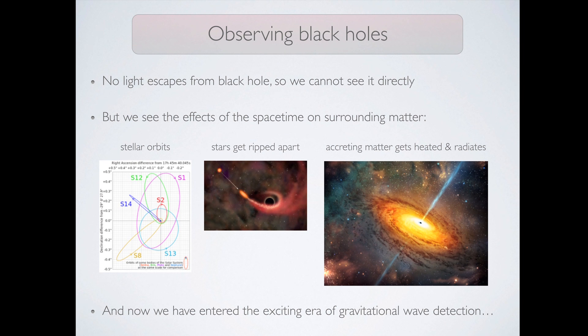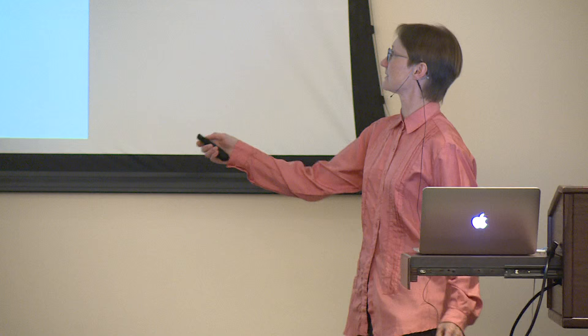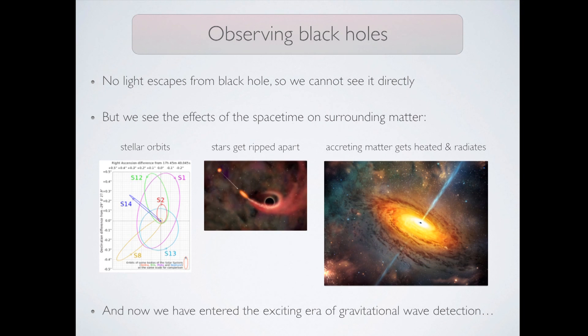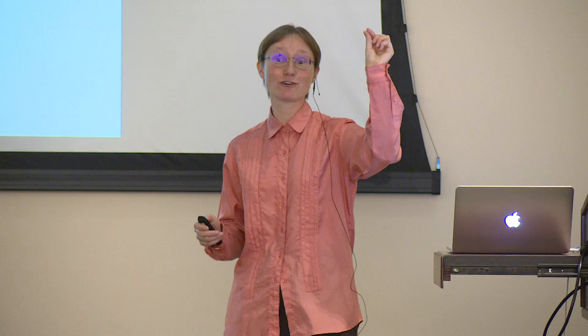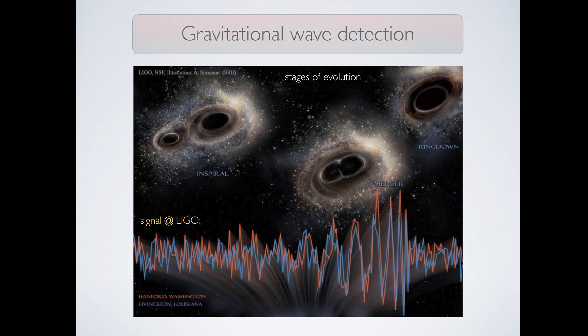So for example, the supermassive black hole at the center of our own galaxy, Sagittarius A star was first ascertained by observing stellar orbits around the center. More dramatically, if a star gets sufficiently close to a comparable size black hole, it literally gets ripped apart. More typically, as matter falls onto the black hole and spirals in, it gets heated up by friction and we can then observe this characteristic radiation. And pretty soon we'll have a new telescope, the so-called black hole telescope, that will be actually able to resolve the angular size of a black hole. And now, on top of all that, we have entered the exciting era of the gravitational wave detection.